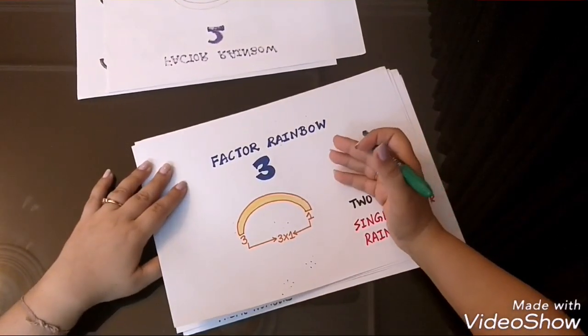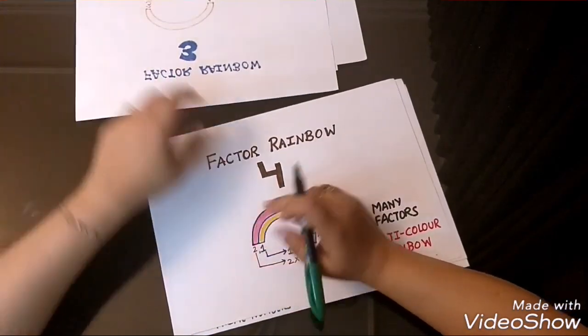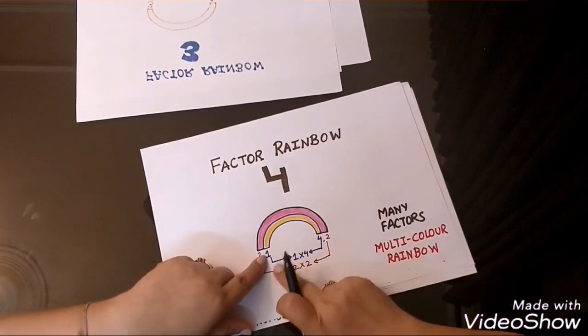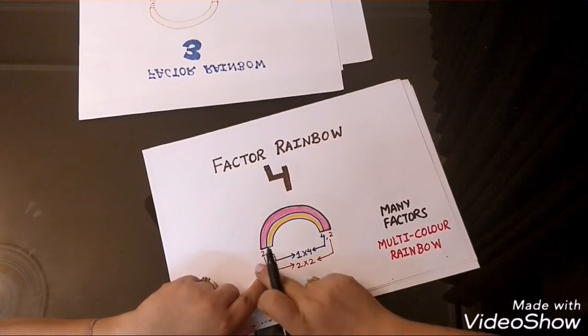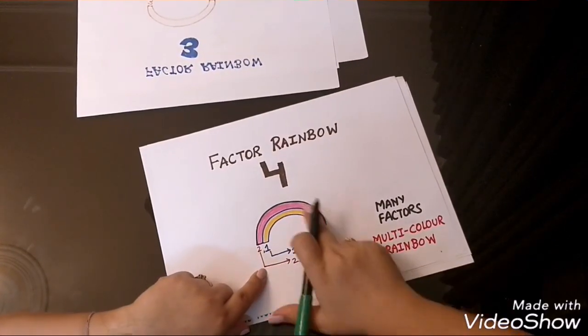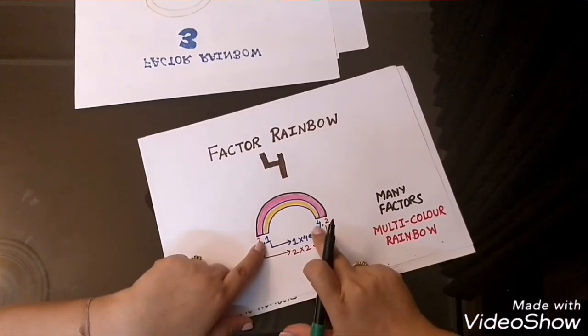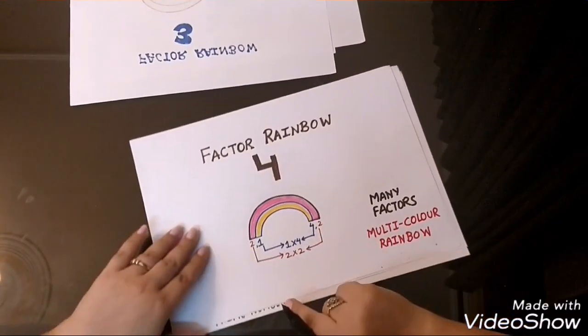Now, let's move to the number 4. How do I get 4? We get 4 by multiplying 1 by 4 and by multiplying 2 by 2. So, there are many factors apart from 1 and 4. So, it is a multi-color rainbow.